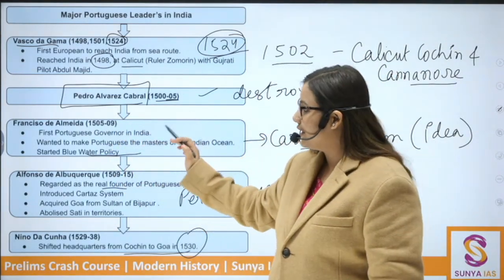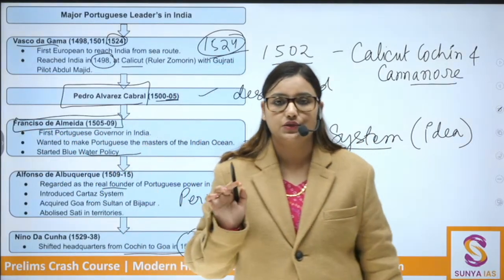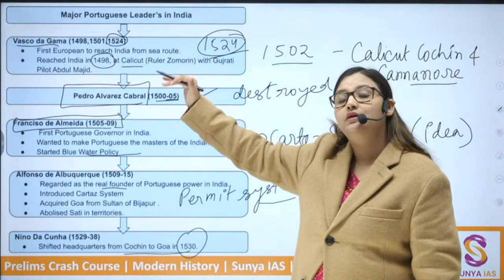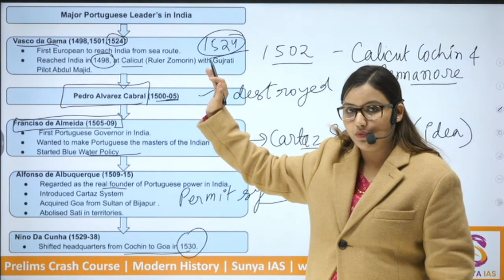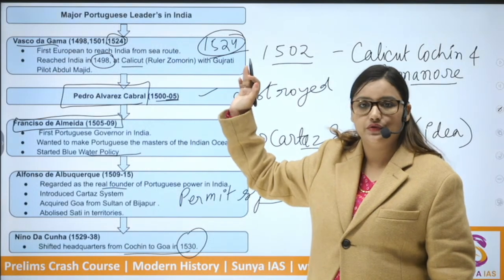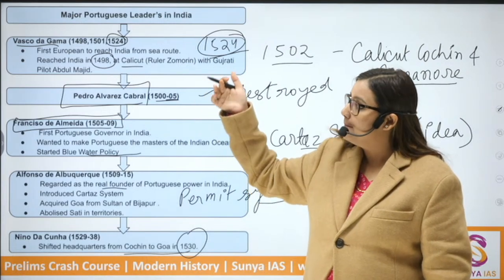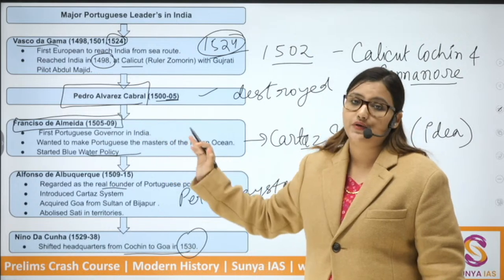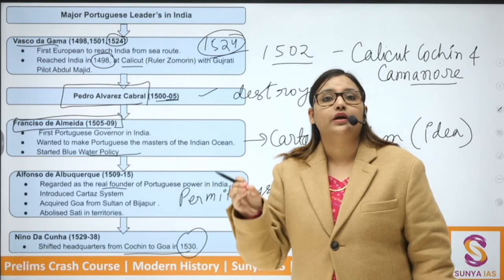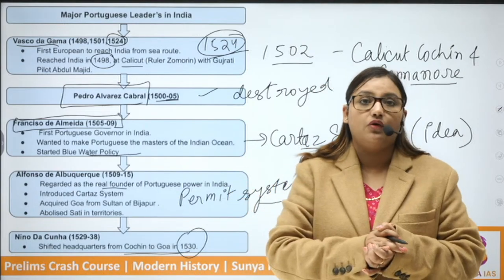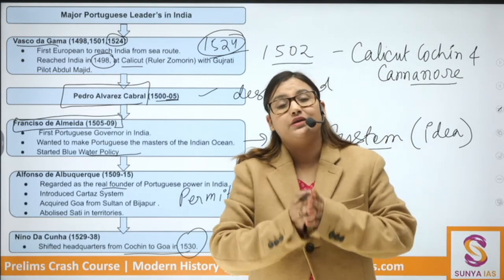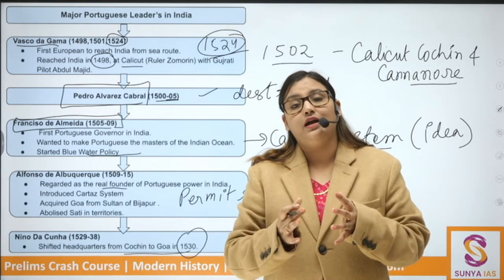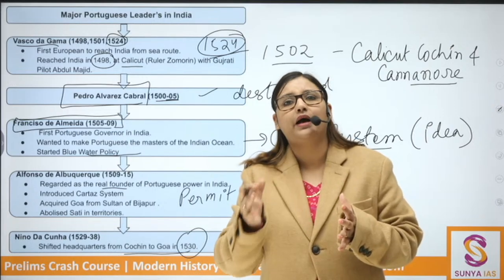Vasco da Gama was an explorer, not a governor — the first traveler to reach India and start trading posts. When he decided to fortify the settlements, he had a clash with Zemurin. To have better execution, the Portuguese government decided to send governors. The first governor was Francisco de Almeida. He was asked to consolidate Portuguese power in India and to destroy Muslim trade by seizing Aden, Ormuz, and Malacca.